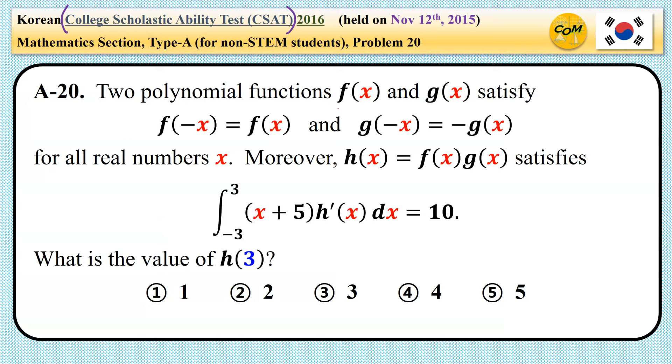It says two polynomial functions f(x) and g(x) satisfy f(-x) = f(x) and g(-x) = -g(x) for all real numbers x. Moreover, h(x), which is defined as f(x) times g(x), satisfies the integral of (x + 5) times h'(x) dx from -3 to 3 gives 10. What is the value of h(3)?